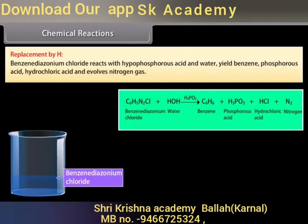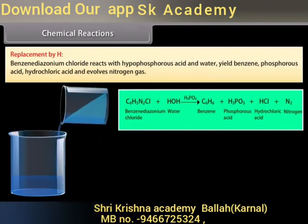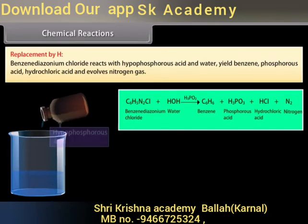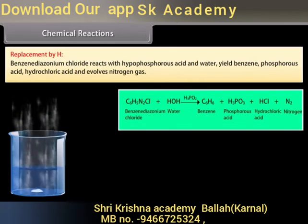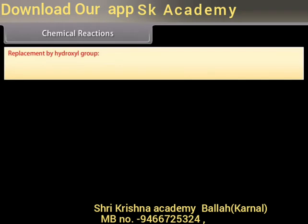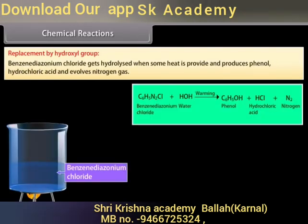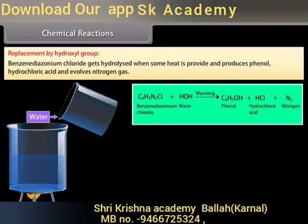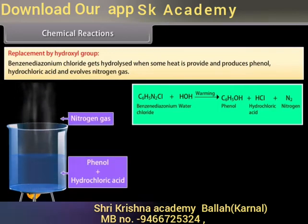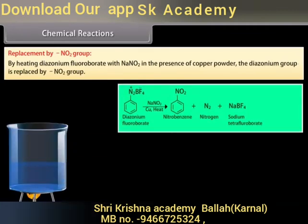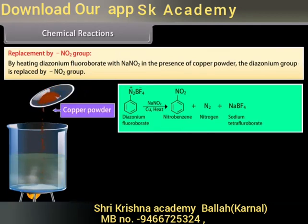Replacement by hydrogen: Benzene diazonium chloride reacts with hydrochloric acid and water to yield benzene, phosphorous acid, hydrochloric acid, and nitrogen gas. Replacement by hydroxyl group: Benzene diazonium chloride undergoes hydrolysis when heated to produce phenol, hydrochloric acid, and nitrogen gas. Replacement by nitro group: By heating diazonium fluoroborate with sodium nitrite in the presence of copper powder, the diazonium group is replaced by a nitro group.